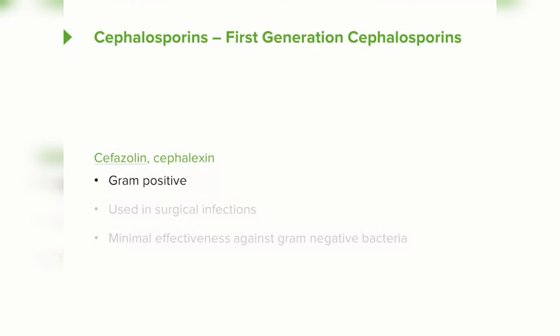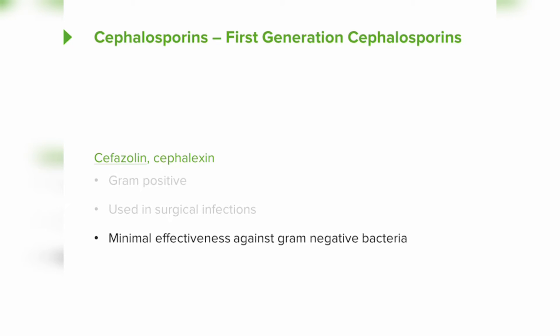Cephalosporins are divided into first, second, third, and fourth generation. In general, the first generation are more gram-positive active and the fourth generation tend to be more gram-negative, with a spectrum in between. Cefazolin and cephalexin are first-generation agents — they're gram-positive active and very useful in surgical infections, since many come from Staph aureus and skin surface organisms. There is minimal effectiveness against gram-negative bacteria.